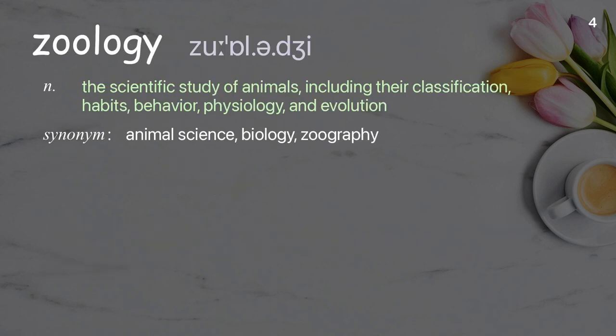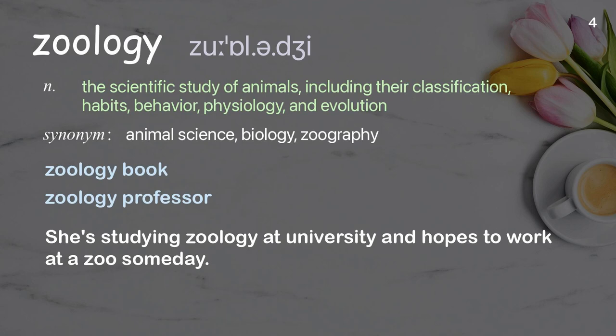Zoology. The scientific study of animals, including their classification, habits, behavior, physiology, and evolution. Examples: zoology book, zoology professor. She's studying zoology at university and hopes to work at a zoo someday.